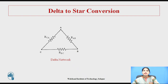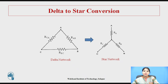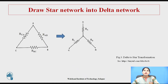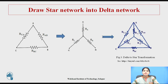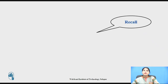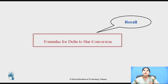Now let us see the delta to star conversion. We have a delta network and we want to convert it into a star network. We will see the procedure for the conversion. The first step is to draw the star network superimposed into the delta network. Before moving forward, pause this video for a few seconds and recall the formulae for conversion of delta to star network.